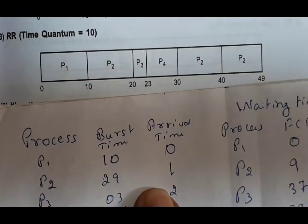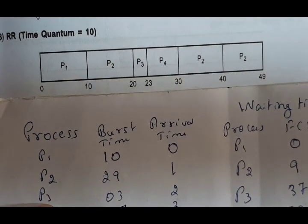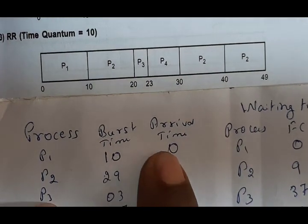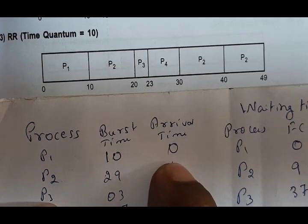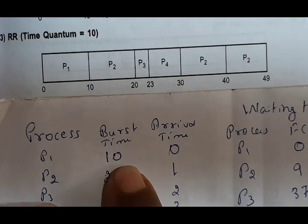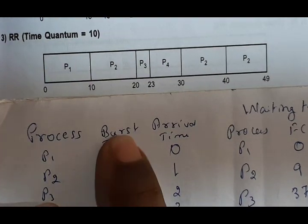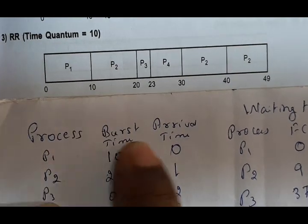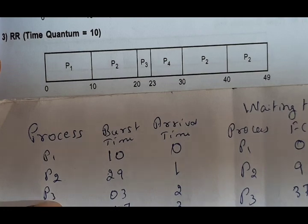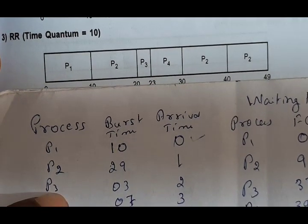Next is Round Robin. Here the time quantum is 10. Which process arrived at time 0? P1 only. So P1 executes. The time quantum is 10, and the burst time is also 10, so it executes in full and completes its execution. Next, at time 10, all other processes have arrived.